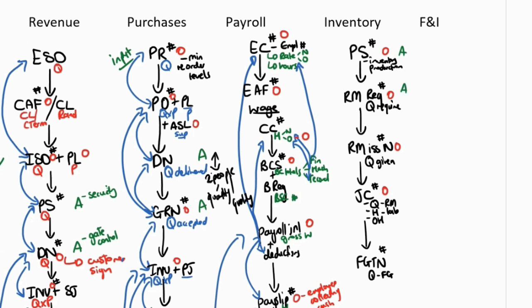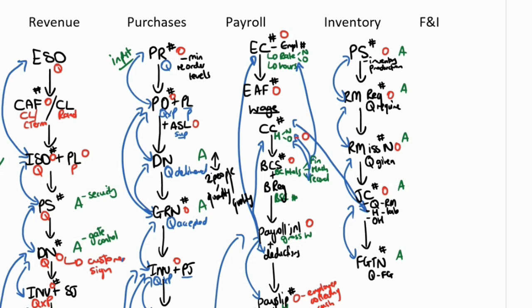Segregation of duties is applied everywhere — as seen in the factory visual, all areas are split so the people involved will be different. Access controls with physical inventory throughout: security cameras, locking up, and so on. For reconciliation, each document is reconciled to the previous one: raw material requisition quantity to the production schedule, issue note to the requisition, job card quantity to the raw material issue notes, hours reconciled to the wage clock card for labor hours, overheads to an allocation schedule, and finished good transfer note quantity to the job card quantity.